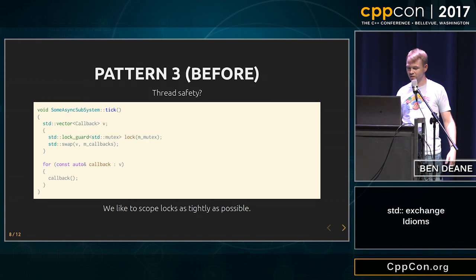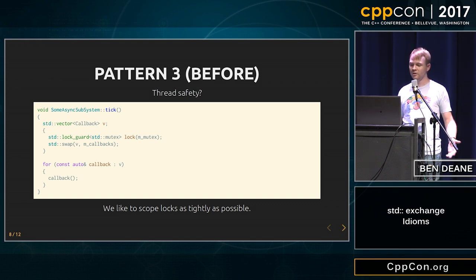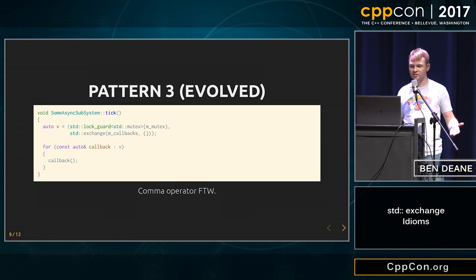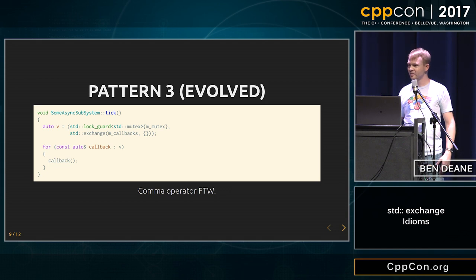What about thread safety? My code looks like this — I have to take stuff out of the callbacks because I have to put it underneath the lock, because anyone can add stuff to it. Well, no problem. There's a lock guard — it lives till the semicolon. There's a comma operator. Exchange RVOs into your vector or whatever. I think this is very nice.